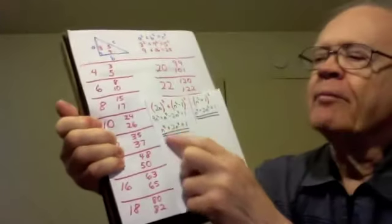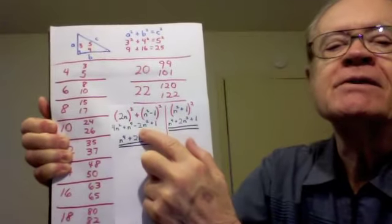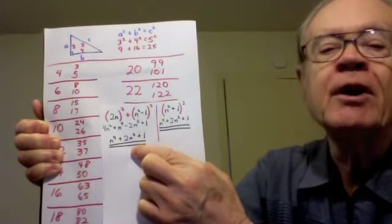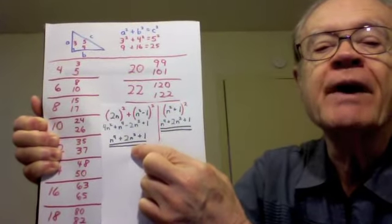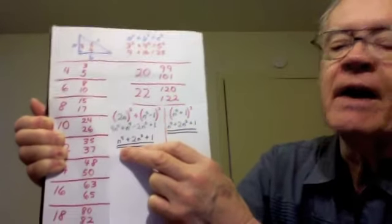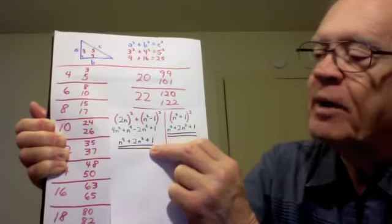We combine the like terms 4n squared and minus 2n squared, and we get this single middle term, positive 2n squared. And so the left side turns out to be n to the fourth power plus 2n squared plus 1.